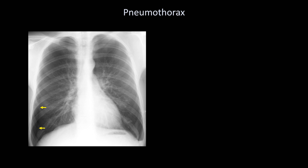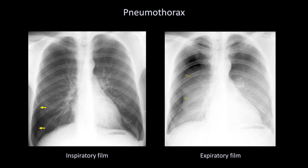Because some smaller pneumothoraces are easy to overlook, there are a few tricks that one can use to make their presence easier to identify. One trick is to compare inspiratory to expiratory films. The standard film is an inspiratory one. As the patient exhales, the lung volume becomes smaller while the volume of the intrapleural air remains the same. Since the diaphragm is higher during expiration, a constant intrapleural volume means that the pneumothorax will be wider. Also, on expiration, the lung parenchyma becomes more crowded and thus whiter on an X-ray, increasing the contrast between the lung and pleural air. And here is the expiratory film — the pneumothorax is much easier to see.